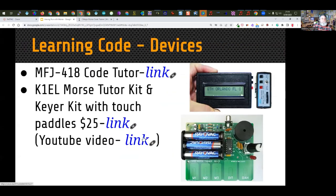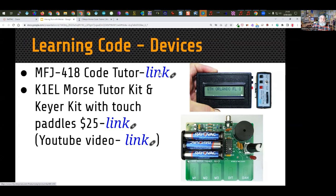There are also hardware devices for learning code. The MFJ 418 code tutor is a Morse code tutoring device that generates endless random code for you to practice with. K1EL has the Morse code tutor kit, which serves three purposes: it's a code tutor, a memory keyer, and you can also connect a set of paddles to it. So even after you learn Morse code, you can continue to use this as a keyer.